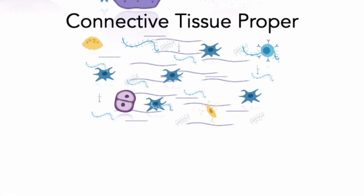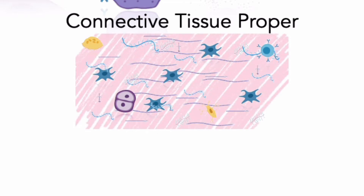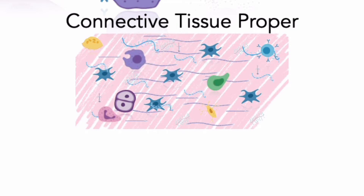Let's begin with connective tissue proper. Connective tissue proper contains a diverse collection of cell types, extracellular fibers, and a syrupy ground substance. Some cells of connective tissue proper are permanent residents, while others are not always present. Such cells migrate into connective tissues to defend and repair areas of injured tissue, and then leave when they are done. For example, some white blood cells circulate in the bloodstream, and then migrate out through the walls of veins where they fight invading bacteria in connective tissues.